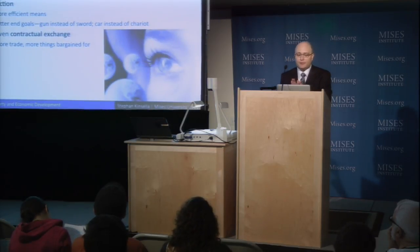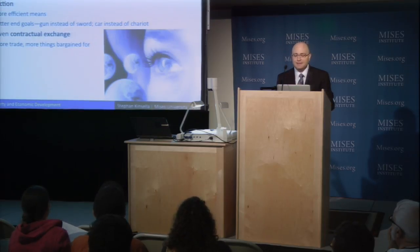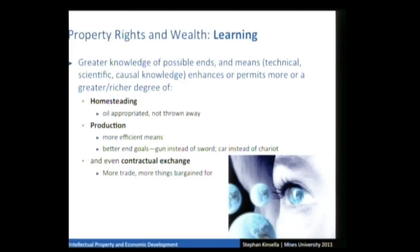Greater knowledge of possible ends and means — technical, scientific, causal, cultural, artistic knowledge — helps you be a better homesteader. For example, instead of throwing oil away as a bad, knowing that oil can be used productively means you can homestead it productively and your wealth increases. In production, if you know better techniques to transform iron into steel, you make a better sword or even a car instead of a chariot. Contractual exchange can also be enhanced by more knowledge, because the parties know more about how they can use the things they're trading, about possible trades, and about prices exchanged in the market. So all three ways of creating wealth are enhanced by greater knowledge.